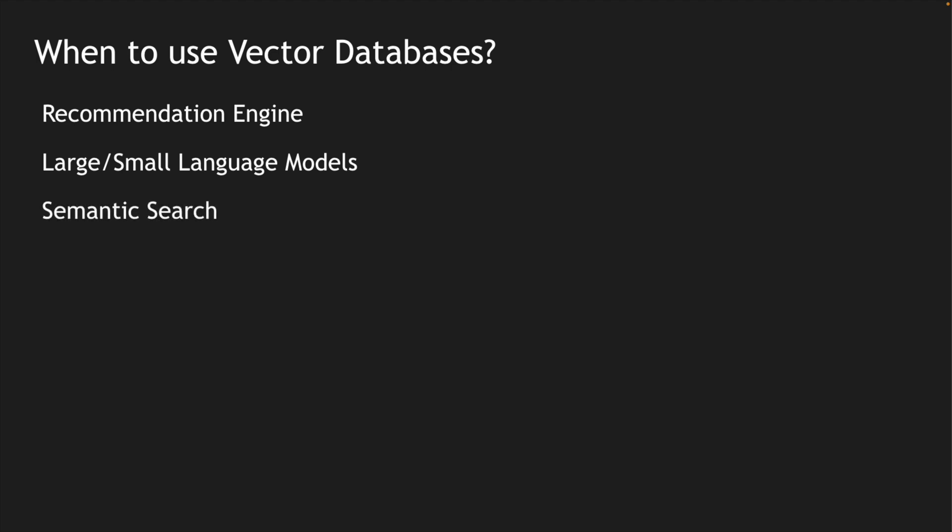The next use case is semantic search. If I want to create a search based on unique text and don't know the exact corresponding product or relevant item, I can use semantic search. A classic example is Google — Google leverages semantic search. Vector databases can be used for semantic search by building and linking relationships between texts. Similarly, for similarity search with images and audio, just like Google Lens, you can post an image and search for similar images using vector indexes built on top of images.